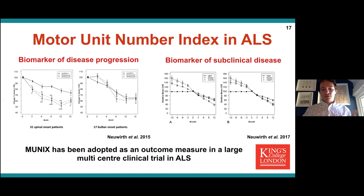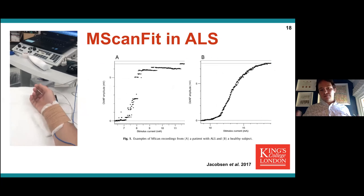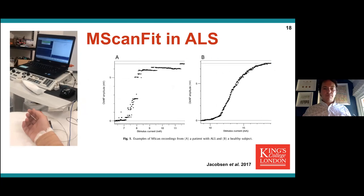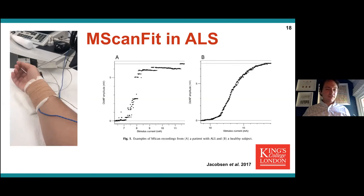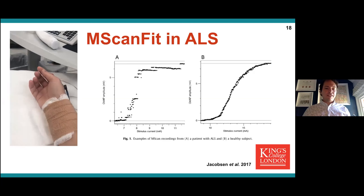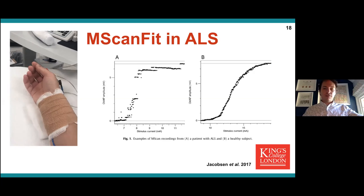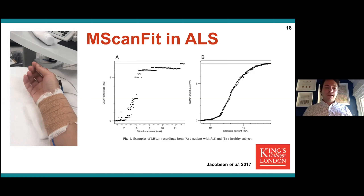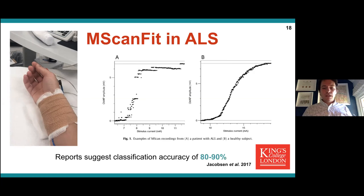Another type of motor unit number estimate is the MSCAN-fit — and this is me having it done. It involves high-frequency pulses from supramaximal currents down to zero. A normal smooth profile on the graph is that of a healthy individual, whereas in ALS you get a fragmented curve, which can then be turned into a measure of motor unit number. Reports suggest a classification accuracy that is very favorable.